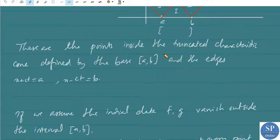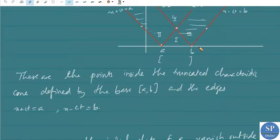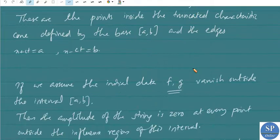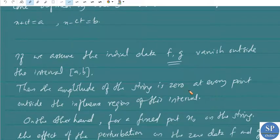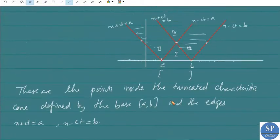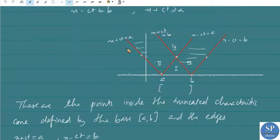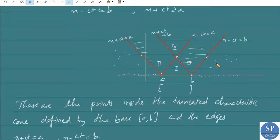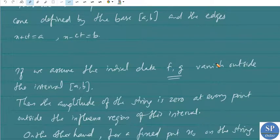If we assume the initial data f and g vanish outside the interval [a, b], then the amplitude u of the string is zero at every point outside the influence region of this interval.